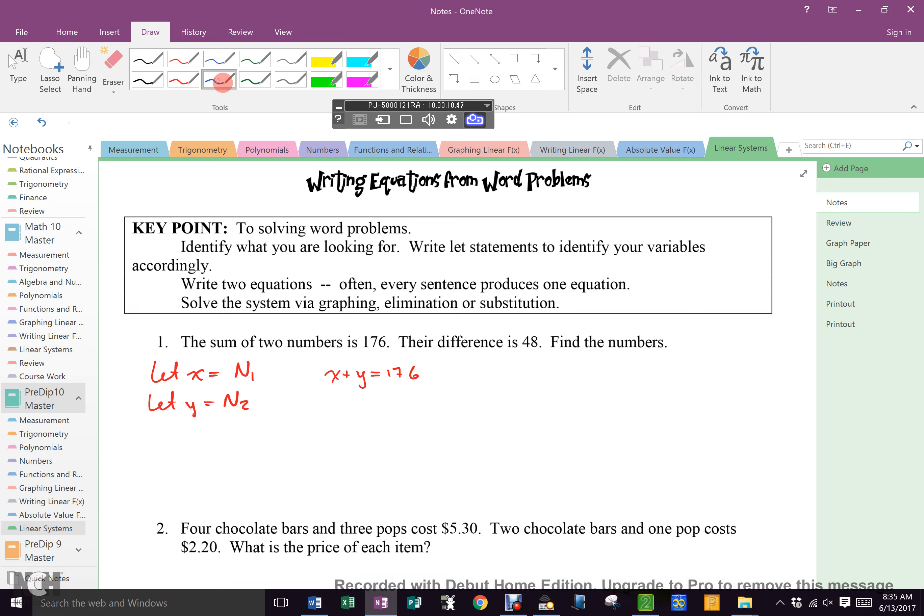Now, do we know something about these numbers? What? They add to 176. So, how do I write that in math class? X plus Y equals 176. What else do we know about these numbers? Their difference is 48. So, what's different? Subtraction. X minus Y equals 48. Why are word problems hard? Do we know how to solve systems?